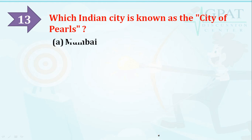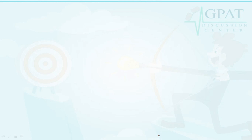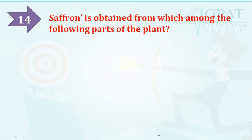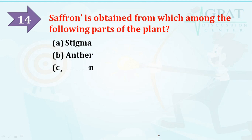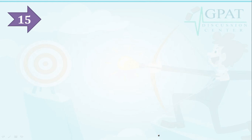Question number thirteen: which Indian city is known as the City of Pearls? Options are: Mumbai, New Delhi, Chennai, or Hyderabad. The right option is Hyderabad. Question number fourteen: saffron is obtained from which part of the plant? Options are: stigma, anther, stamen, or pollen. The right option is stigma.